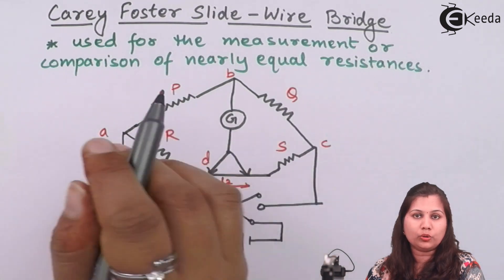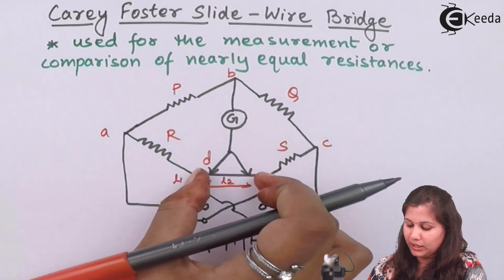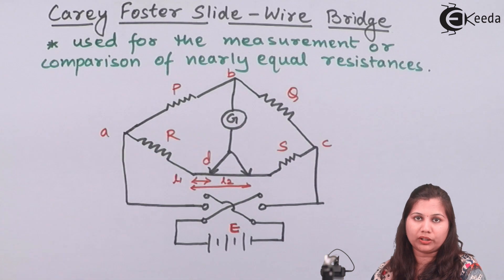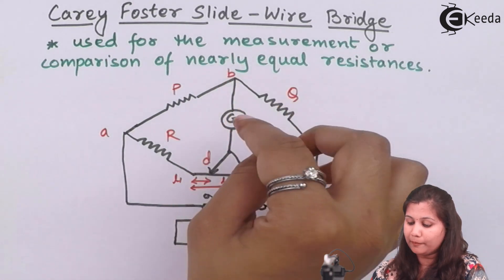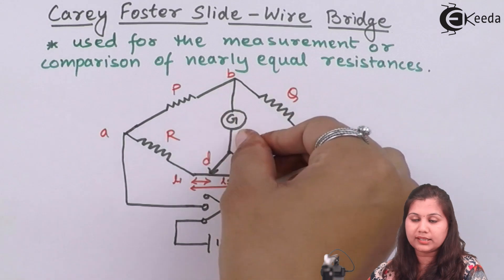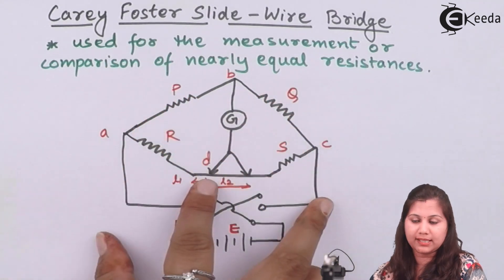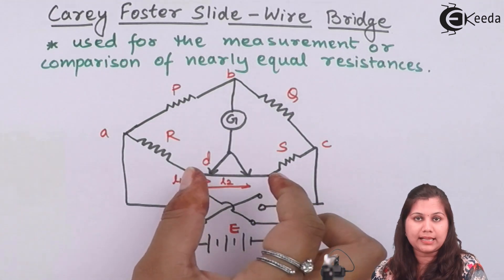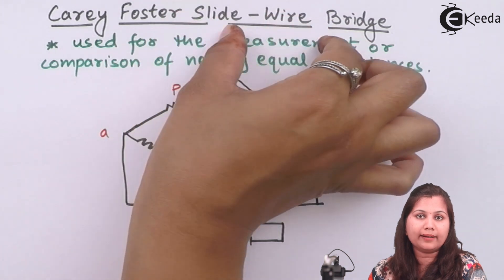P, Q and S are the known resistances. S is the standard resistance and R is the unknown resistance. In between them we have a slide wire with a sliding contact moving over it. The slide wire is connected between the arms, which is why this is called the slide wire bridge. Carey Foster is the scientist who developed this bridge.